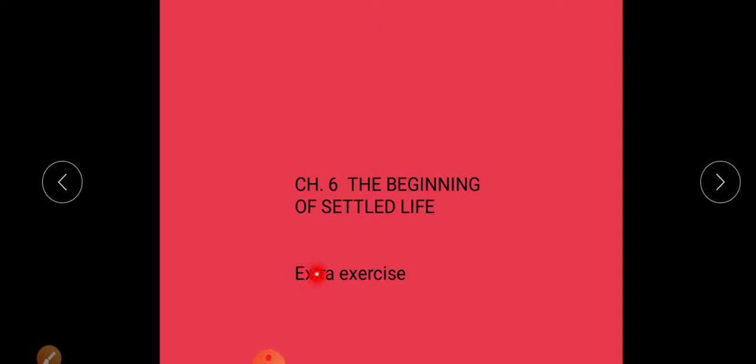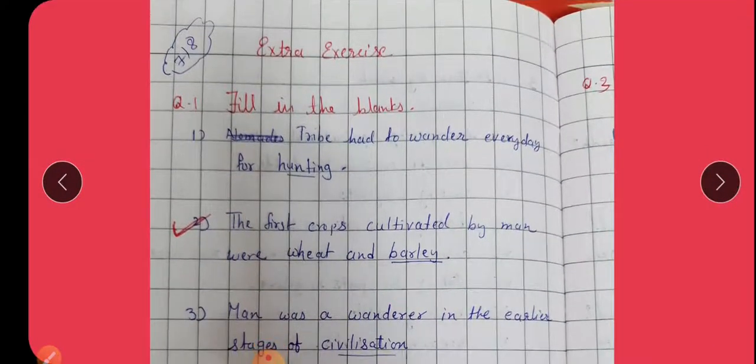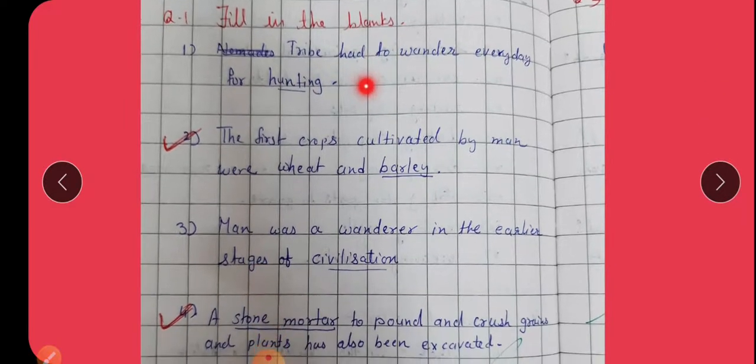Put the heading, extra exercise on new page. Write extra exercise. Fill in the blanks. Tribes had to wander every day for hunting. Underline below hunting.